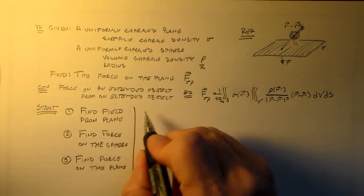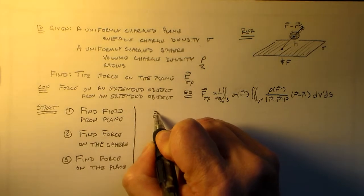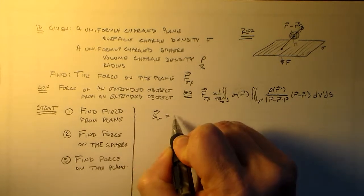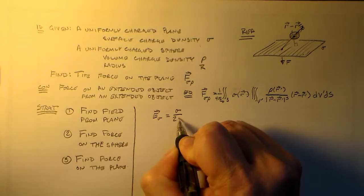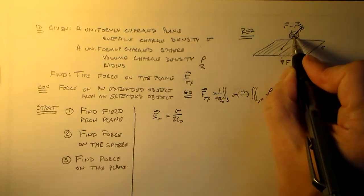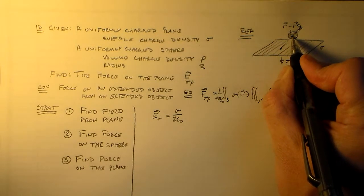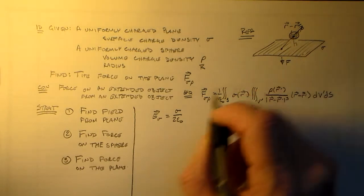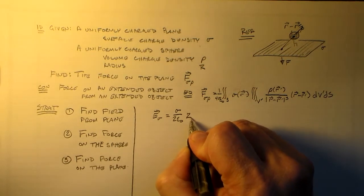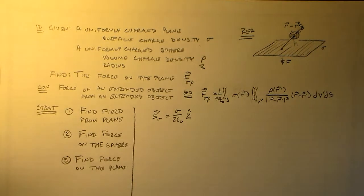So, basically that field from the plane, that field from the plane is sigma over 2 epsilon naught. This is some distance d above there, so it's just in the z-hat direction. So that's it.